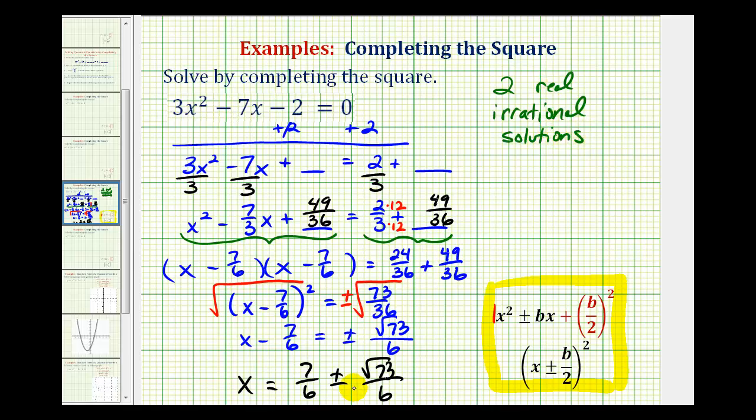Keep in mind, we do have two solutions here: one where we add √73/6, and one where we subtract √73/6.